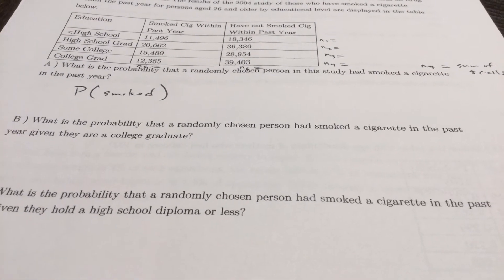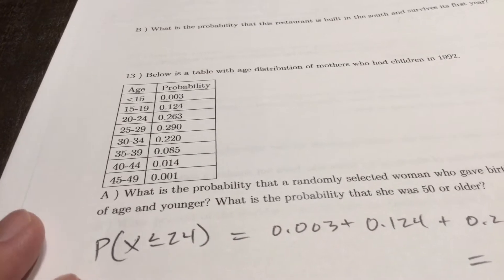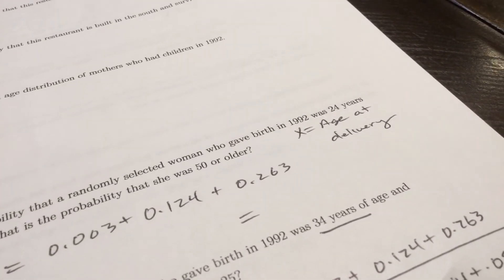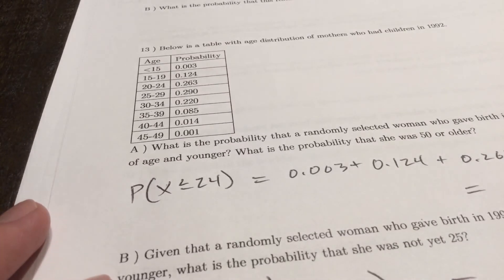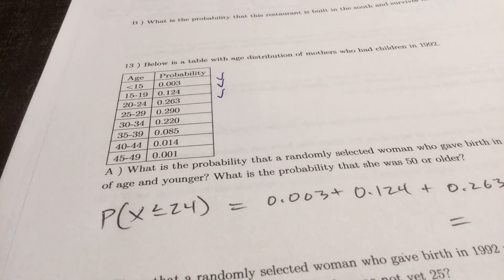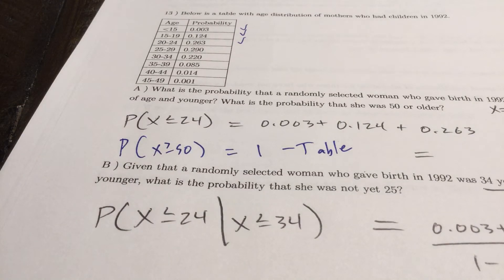I'm just going to give you a hint. We'll talk about with this conditional distribution, we'll talk more about how to do 11d later. Again, not supposed to have all this done, but you can definitely do half of it over this Thanksgiving. What is the probability a randomly selected woman who gave birth in 1992 was 24 years of age and younger? Forgot to do the probability she was 50 or older, so age X is age at delivery. Probability that X is less than or equal to 24 is those three probabilities less than or equal to 24.